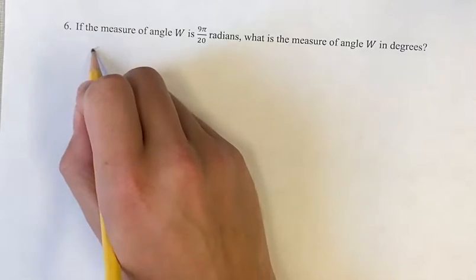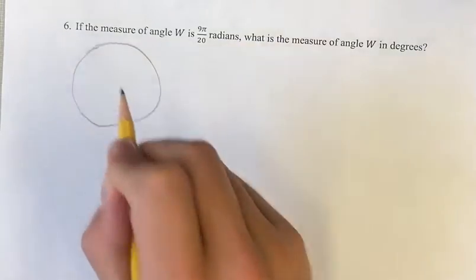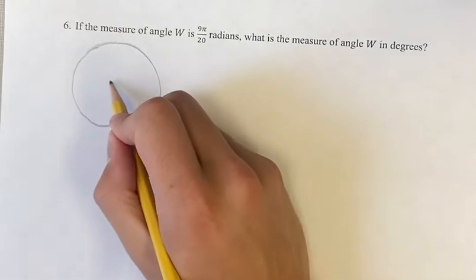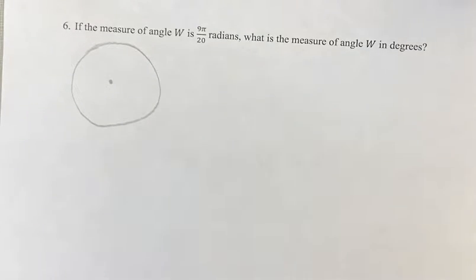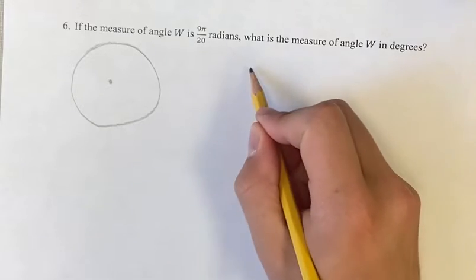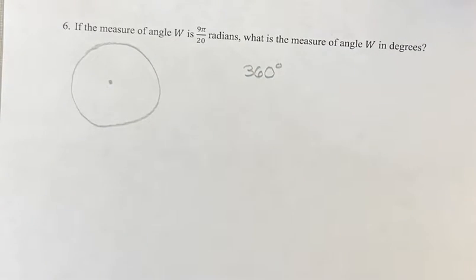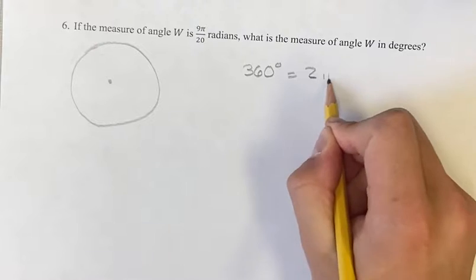What we can do is we can use the fact that a circle is 360 degrees. A circle is also 2π radians.